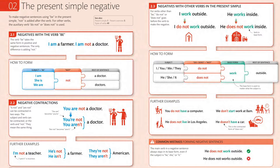A beautiful lesson for beginners in English. To make a negative sentence, we can use the verb 'be' in the present simple and add 'not' after the verb. For other verbs, the auxiliary 'do not' or 'does not' is used. For example, negatives with the verb 'be': 'I am a farmer' becomes 'I am not a doctor.'